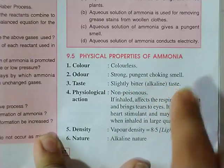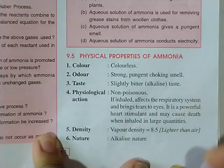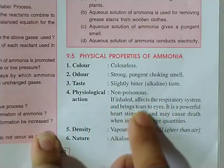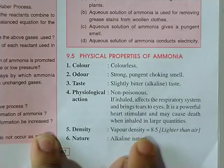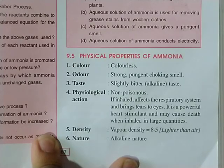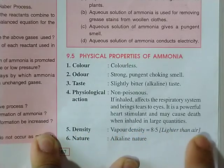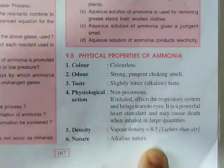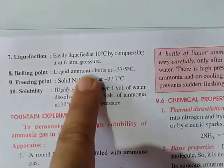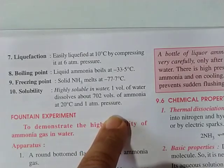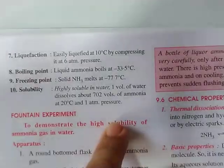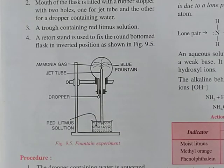The physical properties of ammonia: it is colorless, with a strong pungent choking smell; it has a bitter taste because it is alkaline; physiologically it is non-poisonous but if inhaled, it affects the respiratory system, brings tears to the eyes, and is a powerful heart stimulant — it may cause death if inhaled in large quantity. It is lighter than air, alkaline in nature, and can be liquefied at 10°C under 6 atmospheres of pressure.